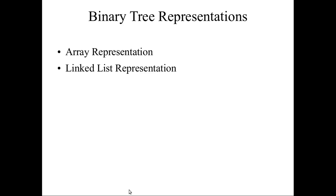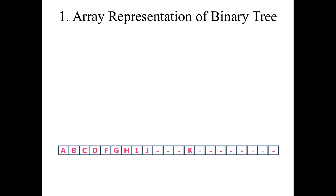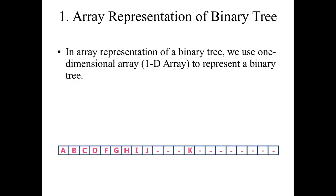In the last video we have seen the types of binary tree. Now we are going to see about the representation of the binary tree. There are two methods: one is array representation and another one is linked list representation. I have given one example, and with this example we will be seeing how to represent this binary tree in array and how to represent it in linked list.